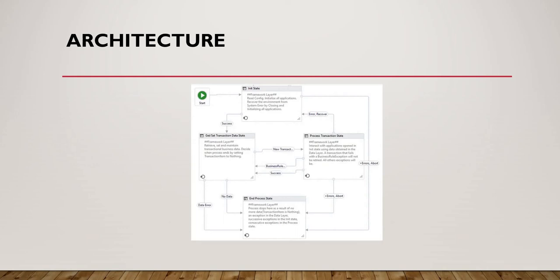Next comes the Get Transaction State. This works as a watchman or gateway for the process. It checks whether transaction data is available. If data is available, it passes that data to the Process Transaction State, where we place the activities to feed the data to the website fields and click the submit button. For example, if there is only one row in the Excel file, the first time it reads that row, data is available, so it passes it to Process State, which feeds the data and performs the submit action.